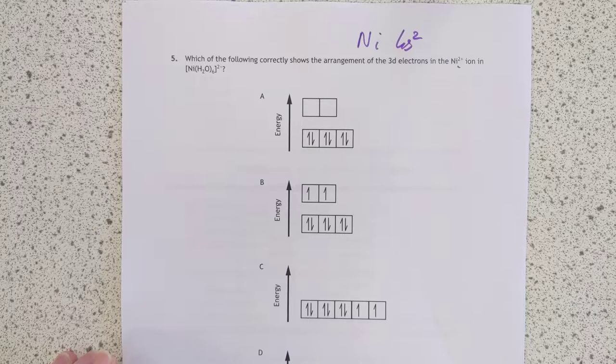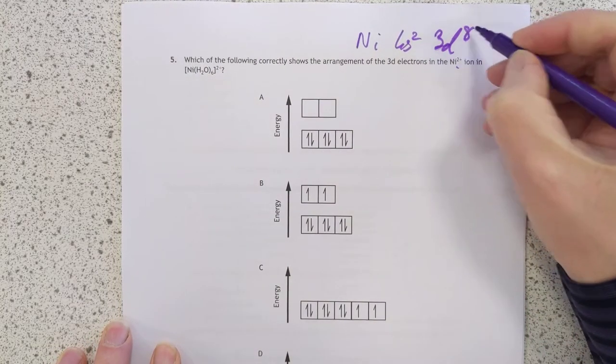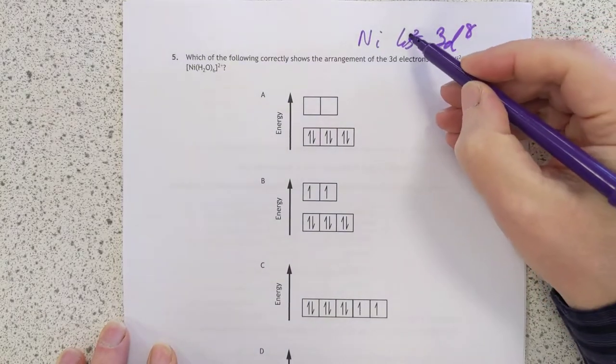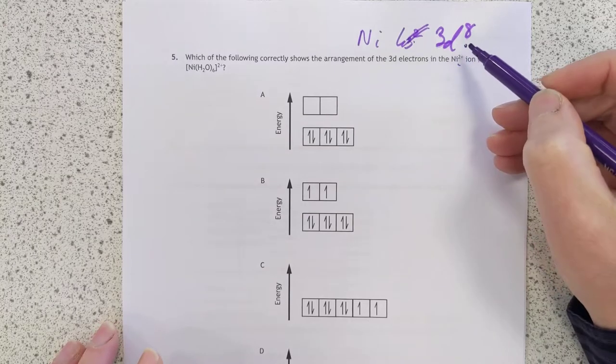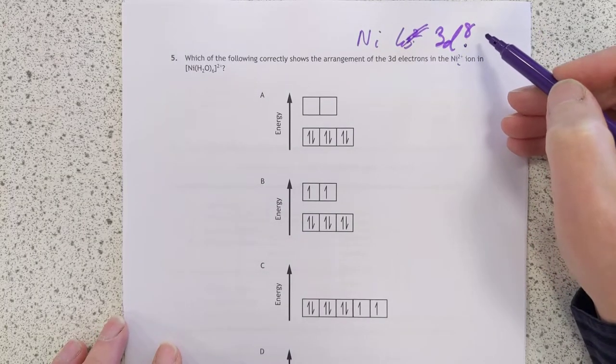Let me count along. 3d1, 2, 3, 4, 5, 6, 7, 8. It was 3d8. Because it's nickel two plus, we've lost these two entirely. Remember, you lose them before that. So we've got eight D electrons.